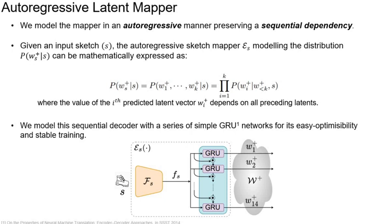The baseline latent mapper ignores the hierarchical abstraction of freehand sketches. Instead of predicting the latent code in one shot, we model it in an autoregressive setting, maintaining sequential dependency among the latent vectors. For an input sketch, the autoregressive sketch mapper is formulated such that the value of the i-th predicted latent vector depends on all preceding latents. We model the sequential decoder with a series of simple GRU networks for easy optimizability and stable training.